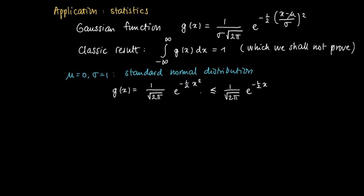It's not hard to show that g(x) is smaller or equal than 1 over 2 times the square root of 2 pi, times e to the power of minus one half x. This is because for x larger than 1, we know that x squared is at least x. So the integral from 1 to infinity of 1 over square root of 2 pi times e to the power of minus one half x may be calculated.